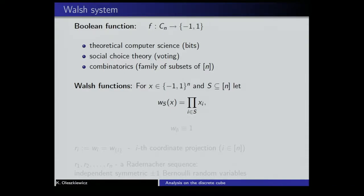The very basic and very useful example of a Boolean function is the Walsh function. There are 2^n Walsh functions — they appeared in Adam's talk as parity functions; in the mathematical community the name Walsh function is more common. Given a subset S of [n], we define a function on the discrete cube by taking the product of all coordinates of the point x that fall into the set S. This is just a multilinear function — or a monomial — if you view the cube as a subset of R^n. The natural convention is that if S is the empty set, then the respective Walsh function is constant equal to 1 on the whole cube.